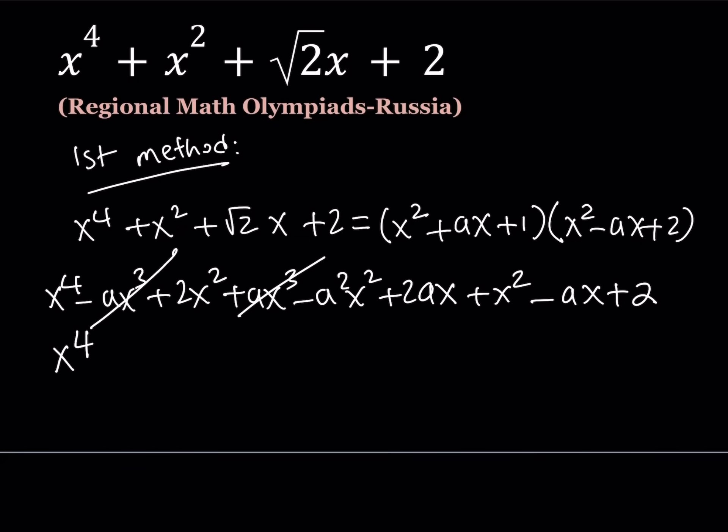x cubed cancels out. That was expected. Now, we have x to the fourth, 2x squared, this is 3x squared. And then I subtract minus a squared x squared. So, it's going to look like this. And then I should look at the x terms.